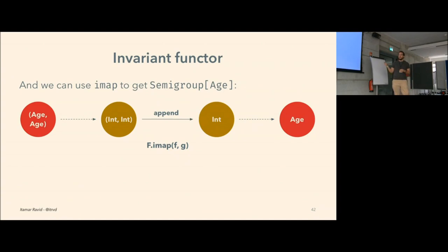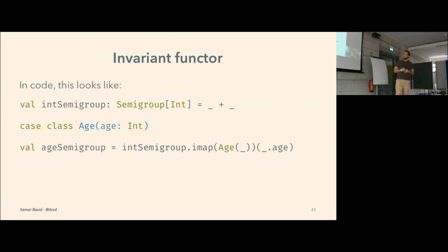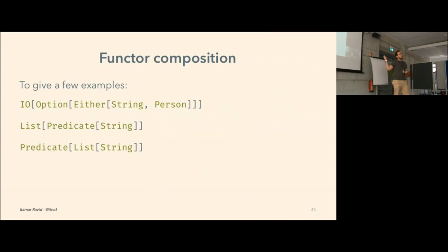In code, this looks like taking my integer semi-group — just a function that smashes two integers together — and imapping it to wrap the integer in an Age and unwrap it, if we had defined an invariant functor instance for the semi-group. An interesting thing about functors is that they compose. If I have an F which is a functor and a G which is a functor, I can wrap them both together to get back another functor. So an IO of an Option of an Either of String or Person, and a list of predicates, and predicates of lists are all functors — just by the fact that they're composed of layers of functors.